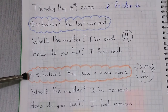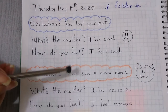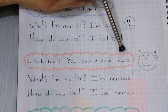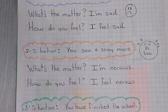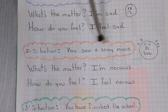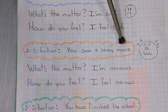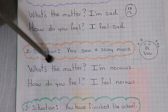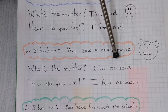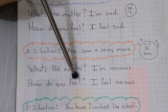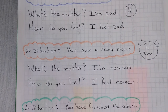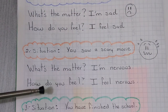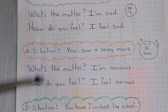Situation number two: you saw a scary movie. What's the matter? I'm nervous. How do you feel? I feel nervous. Remember, you can use both questions to ask about the feelings or emotions of someone, and your answer will depend on the situation.